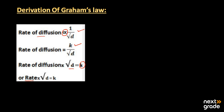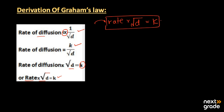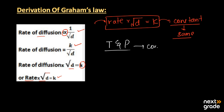We can write R × √D = k. Here k is a constant value — it is the same constant for all gases under study. One important thing to keep in mind: temperature and pressure are held constant throughout this derivation; we are not going to change either of those conditions.